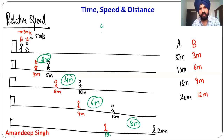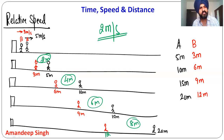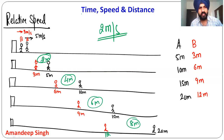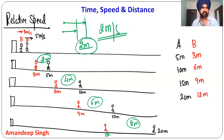You can say that the gap between them is closing at 2 meters per second. A starts at 5 m/s, B starts at 3 m/s — so the gap between them reduces at 2 m/s. That is the relative speed. If the direction is the same, relative speed is 5 minus 3, which equals 2 m/s.